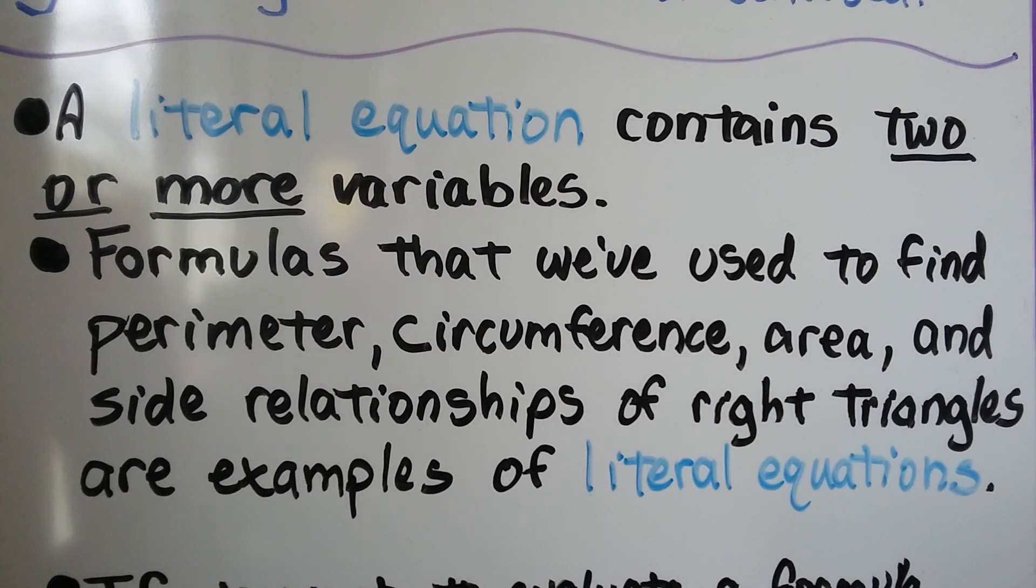A literal equation contains two or more variables, and formulas that we've used to find perimeter, circumference, area, and side relationships of right triangles are examples of literal equations.